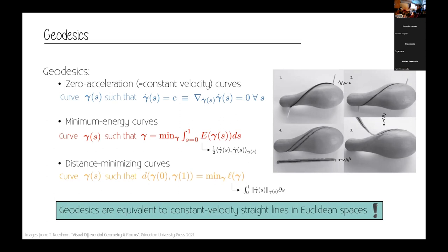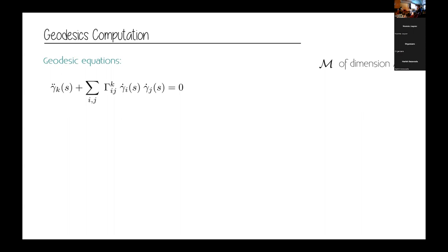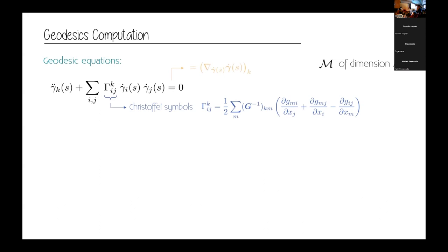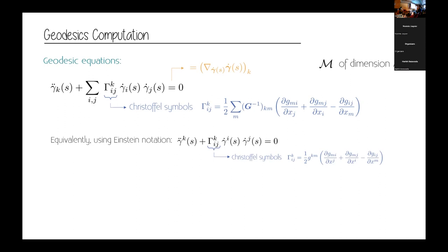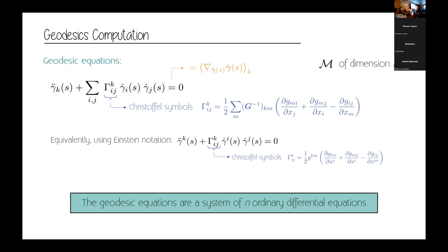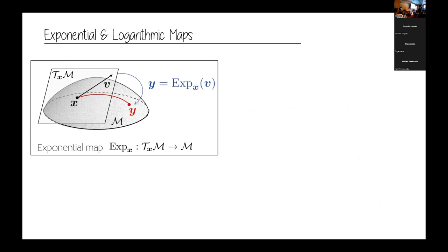To compute geodesics, there is the geodesic equation, which depends on the acceleration of your curve, the velocity of the curve, and the so-called Christoffel symbols. The Christoffel symbols depend only on the Riemannian metric — as I said before, if you have your Riemannian metric, that is sufficient to compute any notion of length and any kind of geodesic on your manifold. This equation tells you that you have zero acceleration, and can be written in Einstein notation. It is a system of n ordinary differential equations where n is the dimension of the manifold, and solving that system gives you your geodesic curve.